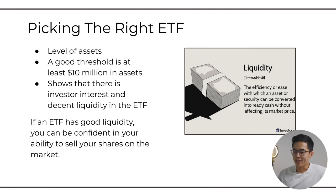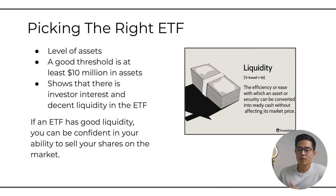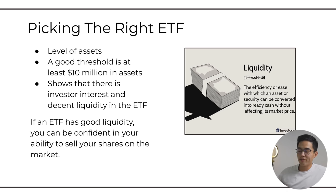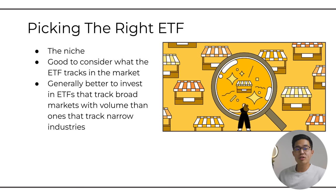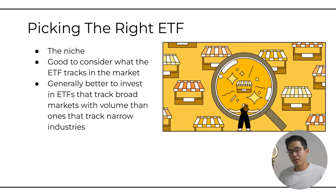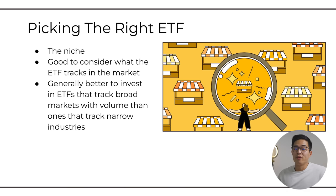Another thing you want to look at is the level of assets. In my opinion, a good threshold is going to be at least $10 million in assets within that ETF. That just shows there is investor interest and decent liquidity. If there's not that much liquidity, not too many people are buying and selling, so it's going to be harder to eventually sell out of your position. If an ETF has good liquidity, you can be confident in your ability to sell your shares on a future date. Also consider the niche — what the ETF tracks in the market. I think it's generally better to invest in ETFs that track broad markets with volume rather than ones that track really narrow industries.